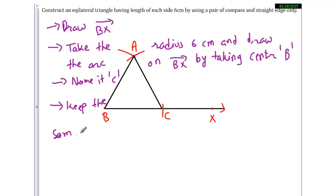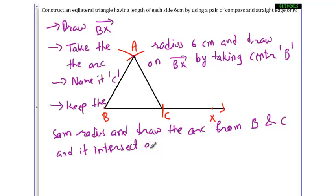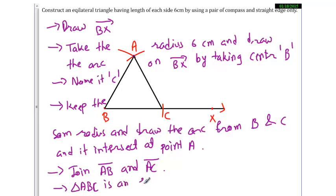Now keep the same radius and draw the arc from B and C and it intersects at point A. Join line segment AB and AC. Triangle ABC is an equilateral triangle.